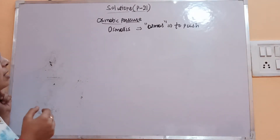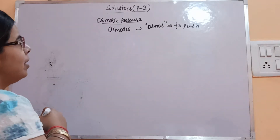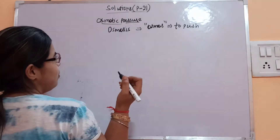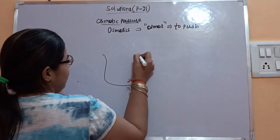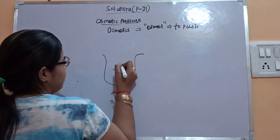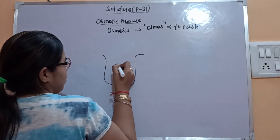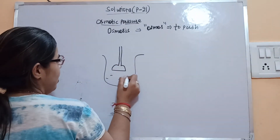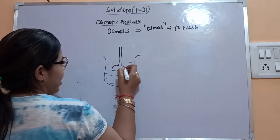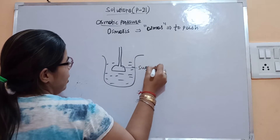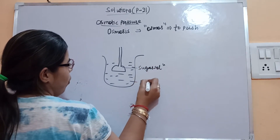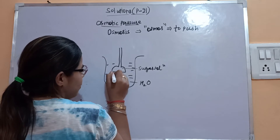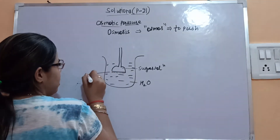Let's discuss its meaning in terms of chemistry. To demonstrate the osmosis process, let's consider one experiment. Take a beaker and place a thistle funnel in it. The beaker contains water, and the thistle funnel contains a sugar solution or any salt solution. The water and sugar solution are separated by a semi-permeable membrane, that is SPM.